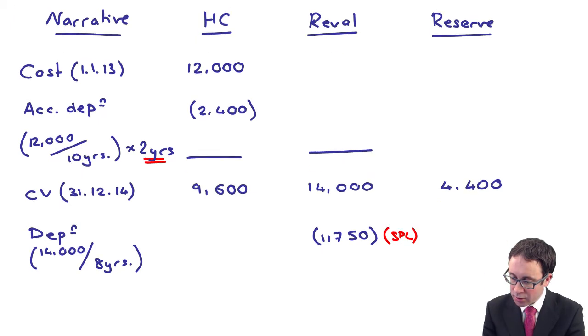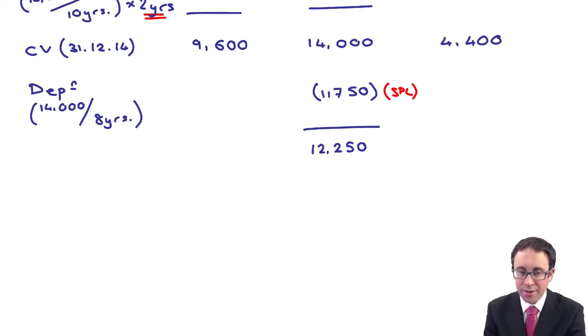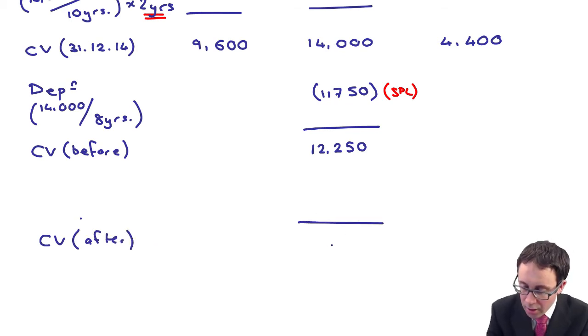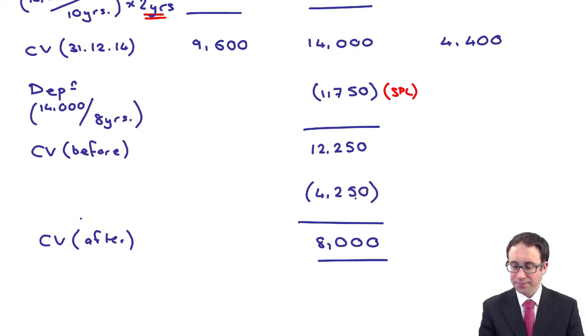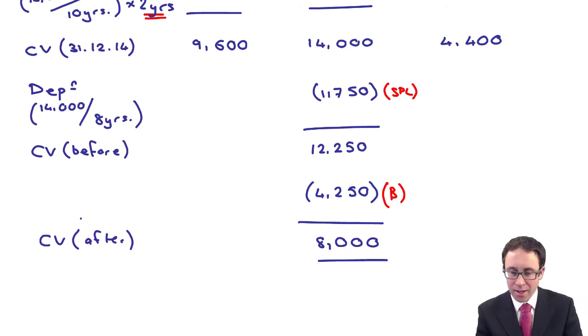What do we then need to do? Well, that's got us to the carrying value of the asset just prior to the revaluation. But that revaluation at the end of the year is a revaluation downwards. We've got the carrying value before the impairment. We know what the carrying value is after - at the 8,000. There has been an impairment of 4,250. That can go in as a balancing figure.